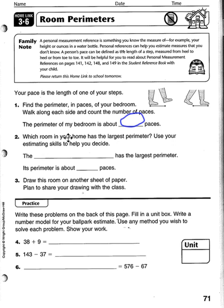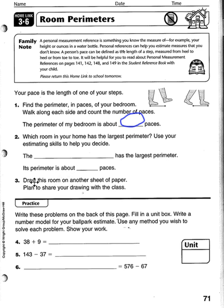Number two: which room in your house has the largest perimeter? Use your estimating skills to help you decide. Students must guess or estimate which room has the largest perimeter — most often it will be the living room or maybe the kitchen. After making the estimation, they should walk around the outside walls of that room to find their perimeter in paces.